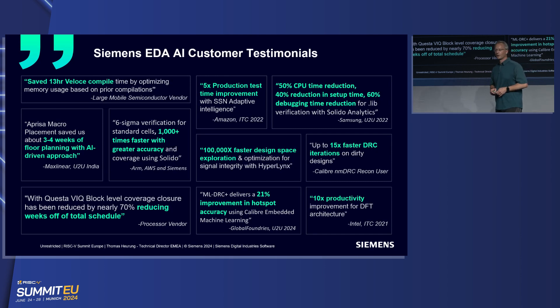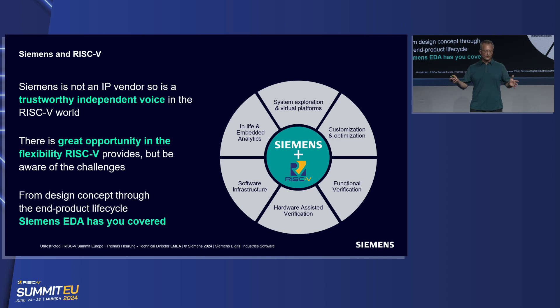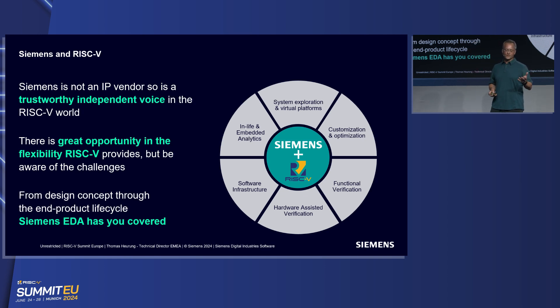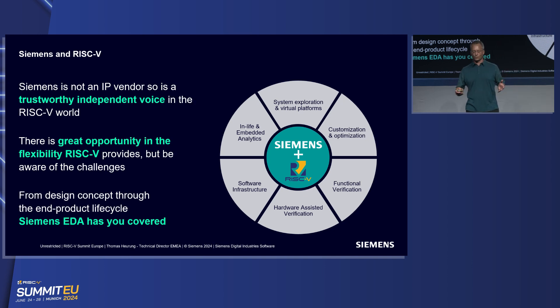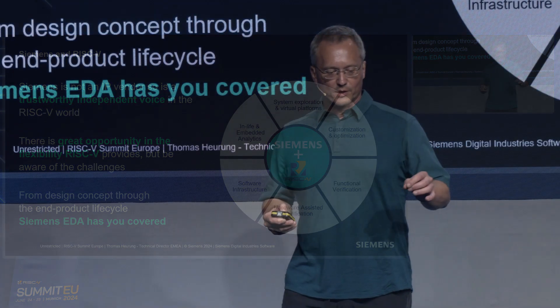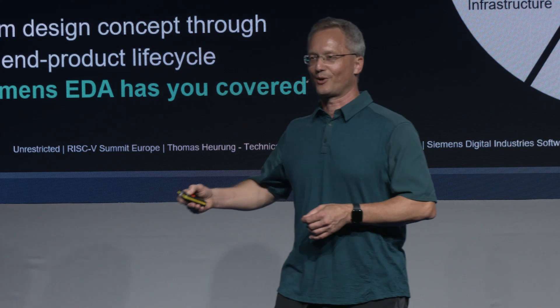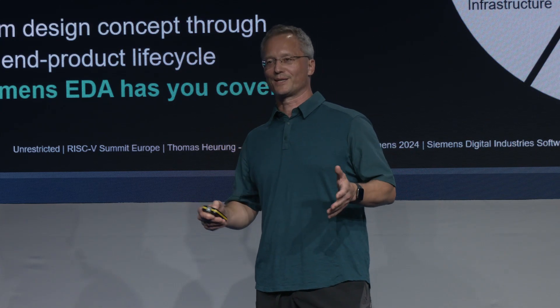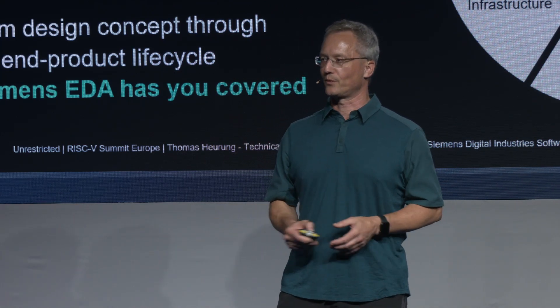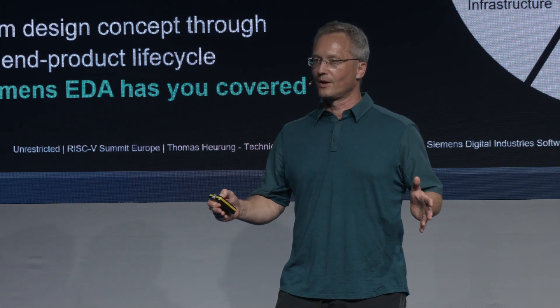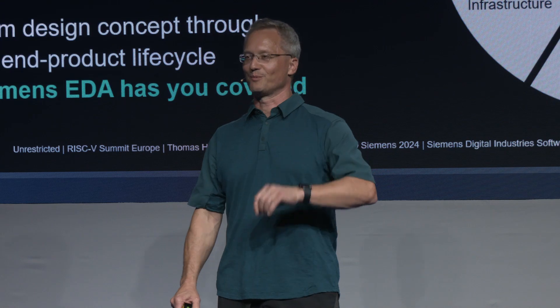In summary, Siemens is not a core IP or CPU IP vendor — we consider ourselves a trustworthy independent voice in the RISC-V world. We see RISC-V as a great opportunity, but everybody needs to be aware of the challenges. From design concept to end-product lifecycle, Siemens EDA has you covered. Please consider us as one of your trusted stakeholders that can make the difference for your RISC-V design. Thank you — and for those interested in the theoretical physicist joke, see me in the coffee break.